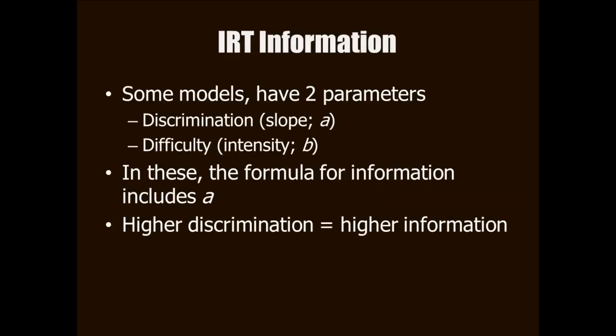The example I just gave was for the simplest model, the Rasch dichotomous model. As I've mentioned before, some models are more complicated. Some are for items that have more than two responses. That's one way they become more complicated. And also, some models not only include an estimate of the item difficulty, but also item discrimination. When discrimination is included in an IRT model, it's also included in the formula for information. The information calculation is weighted by the discrimination. Thus, items with higher discrimination have higher information.